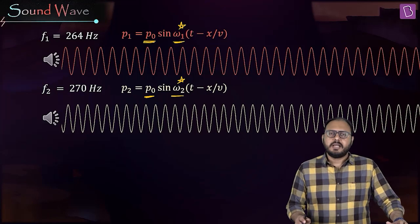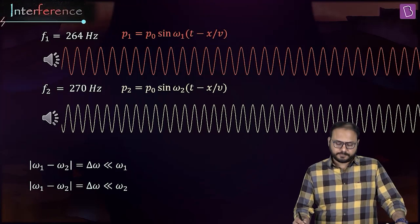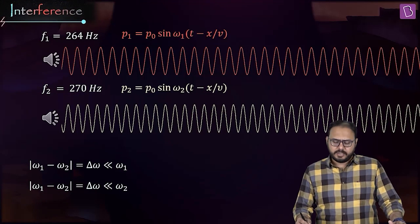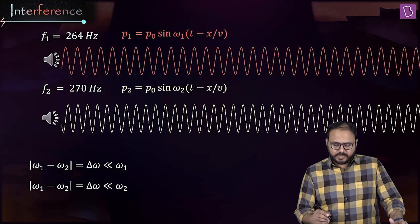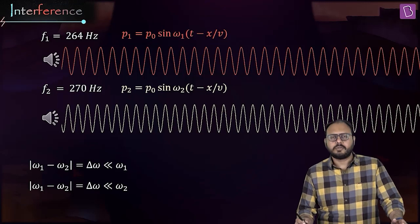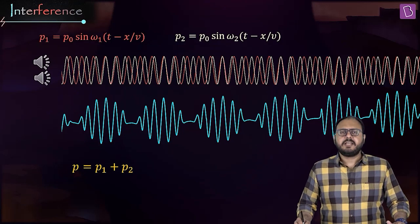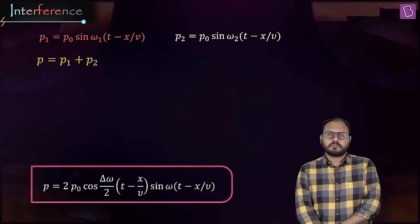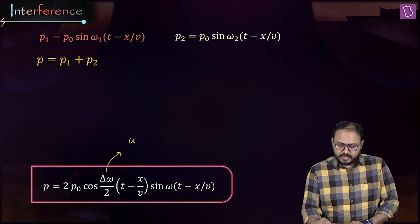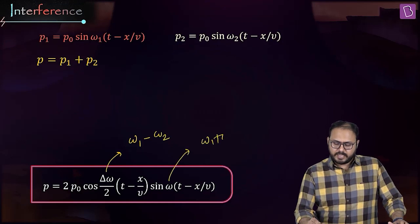Superposition does not require equal omegas — superposition just means you add them. So p = p1 + p2. Using sin C + sin D = 2 sin((C+D)/2) cos((C−D)/2), we get the result. Here Δω = ω₁ − ω₂ (sign doesn't matter since it's inside a cosine, an even function), and ω̄ = (ω₁ + ω₂)/2. Notice the difference between ω₁ and ω₂ is quite small compared to their individual values — hold that thought.